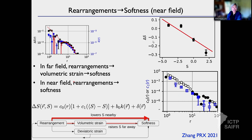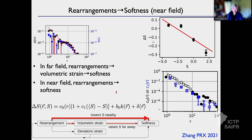What about the near field? Rearrangements scramble local structure and that changes the softness, decaying away with distance. It has a very simple form: something that depends on the softness of the particle — exactly the form I showed earlier in our theory, where softness gets restored to some mean. In this case it wants to be like the softness of its neighbors. There's this volumetric term, and then there's a noise term because of stochasticity. That's how we change softness nearby.